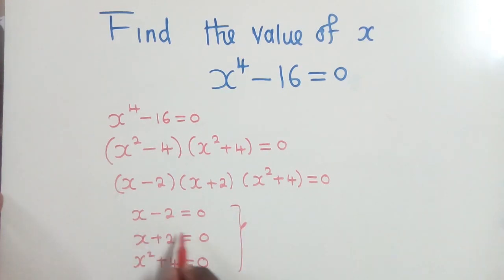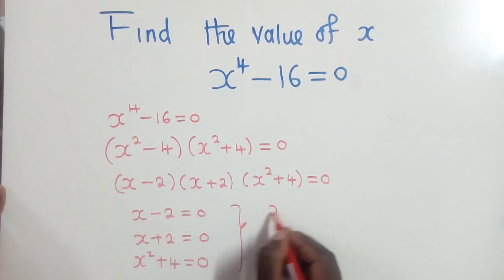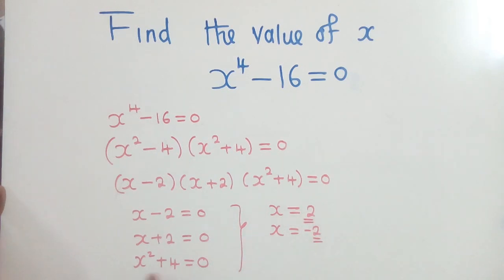So now, for this one, we're going to get x = 2. For this one, we're going to get x = -2. So we have two solutions here. For this one, we're going to get x^2 = -4. We find the square root of negative 4.